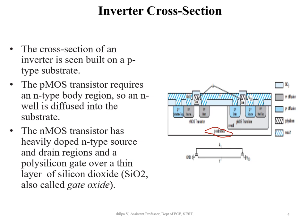N-plus and p-plus diffusion regions are heavily doped regions. The pMOS is a similar structure with p-type source and drain regions. A polysilicon gate sits over a thin layer of silicon dioxide.